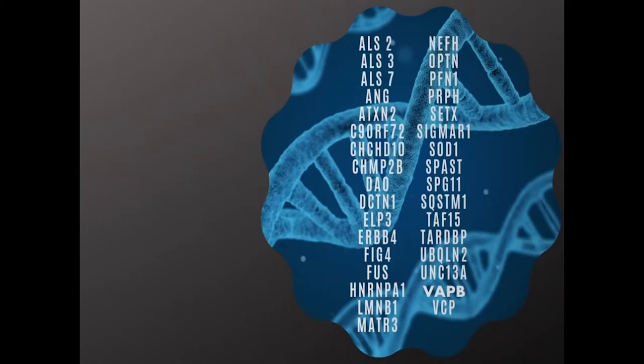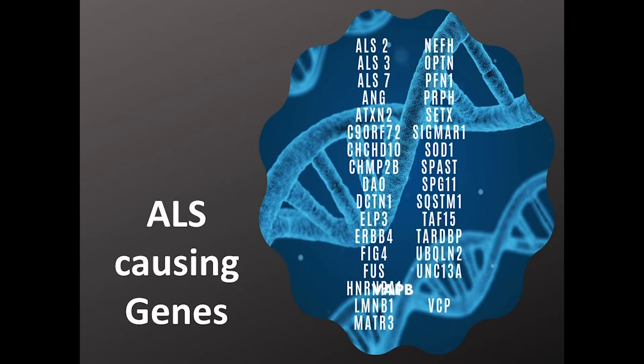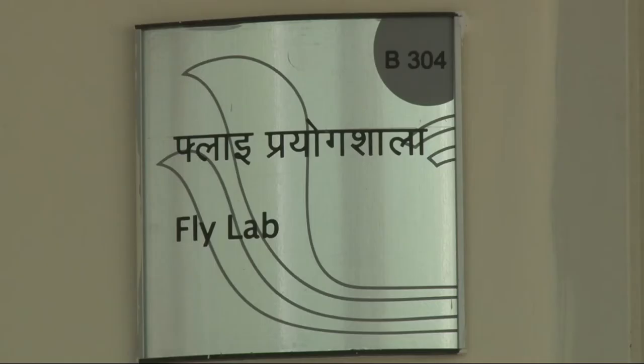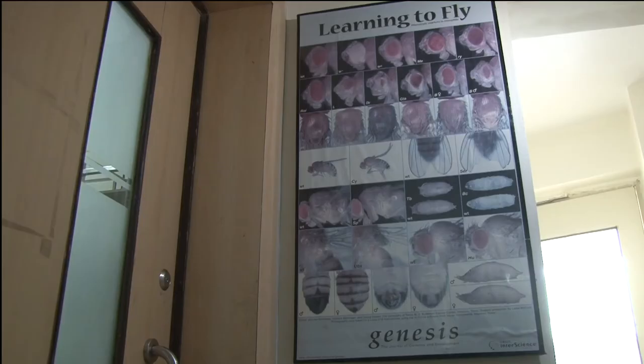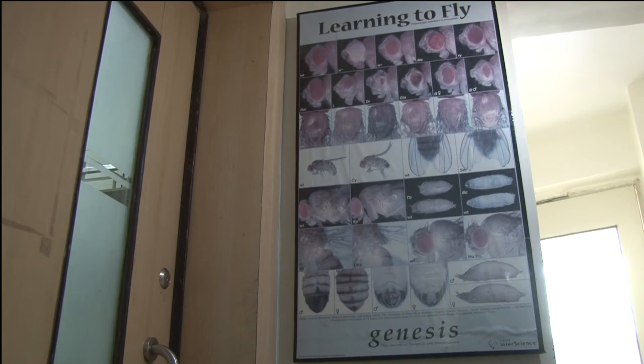Among these genes is the VAP gene — vesicle-associated membrane protein — which is being studied in depth at ISAR Pune using the model system Drosophila melanogaster. I am working in Girish Ratnapakhi's lab, where we are working on this disease called ALS.